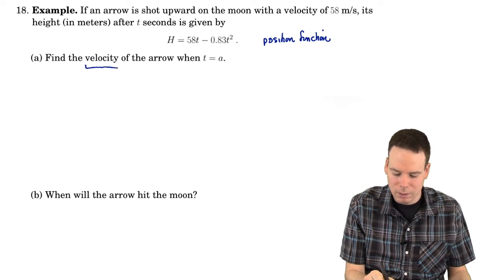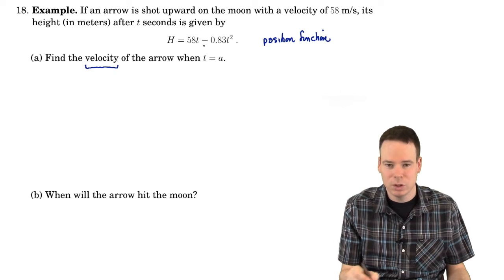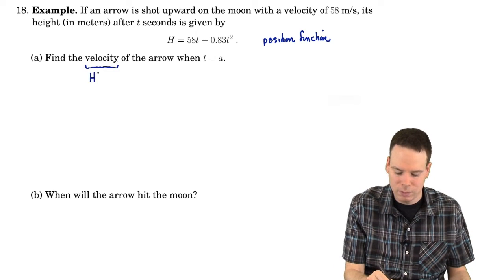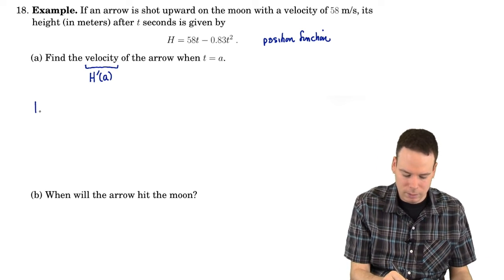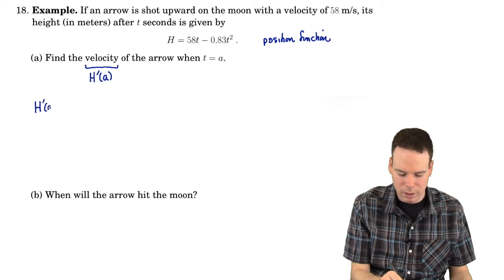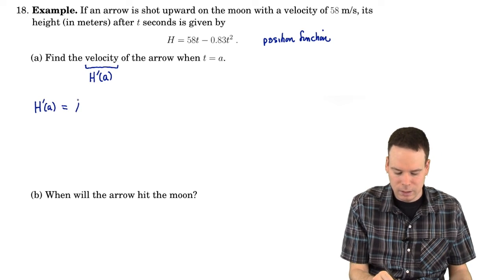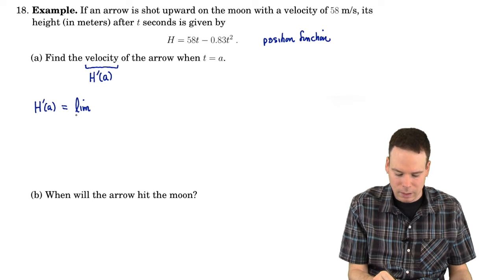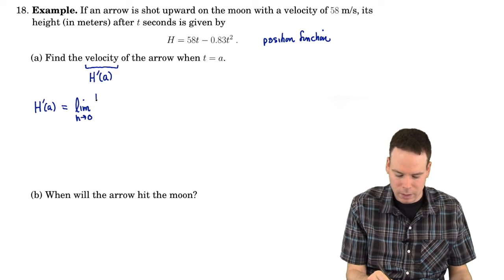Find the velocity of the arrow when t equals a. This is the key. What is velocity? You know position. What is velocity? Velocity is the derivative. Derivative of the position at a. Okay, so h prime at a is defined to be the limit as h goes to 0 of h of a plus little h minus h of a all over little h.